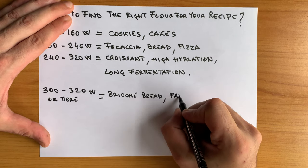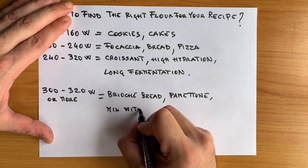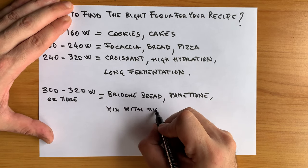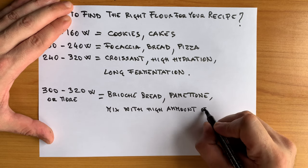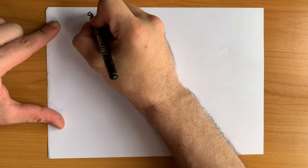Now the most important part. How can I know the W of a flour if it's not reported anywhere? In every flour it is mandatory to indicate the percentage of protein. From that you can convert the W following this table.